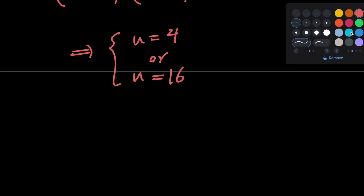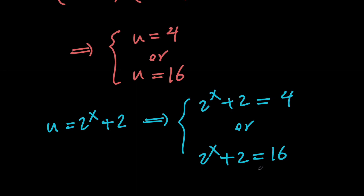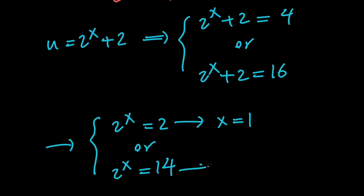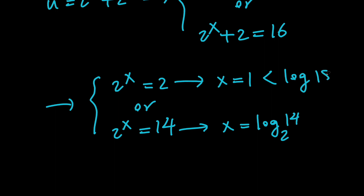Recalling that u equals 2 to the x plus 2, we get 2 to the x plus 2 equals 4 or equals 16. This gives 2 to the x equals 2, so x equals 1; or 2 to the x equals 14, so x equals log base 2 of 14. Both values are less than or equal to log base 2 of 18, so both are valid. Our two solutions are x equals 1 and x equals log₂(14). Method 1 is complete.